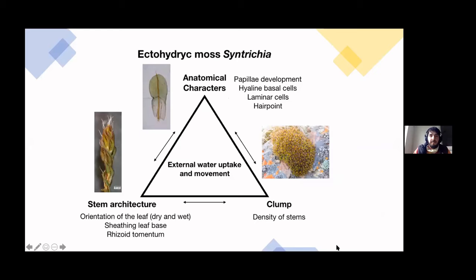So as a way of having a framework to study ectohydric in mosses, we can have different morphological stages or levels where you can look at the plant in different levels. And one of these levels is the anatomical characters. The papilla development is very important. Papilla is kind of a projection of the cell that looks like an antennae, and they have different types of papilla in Syntrichia.